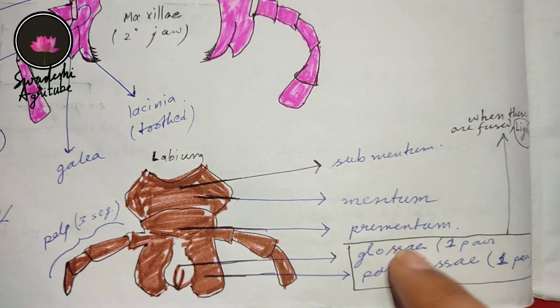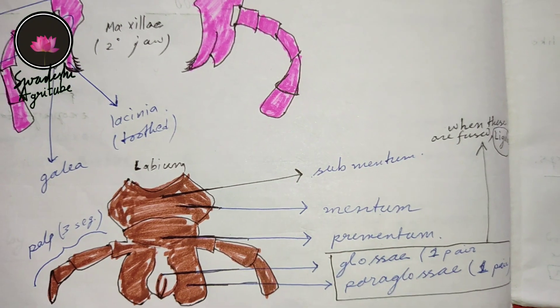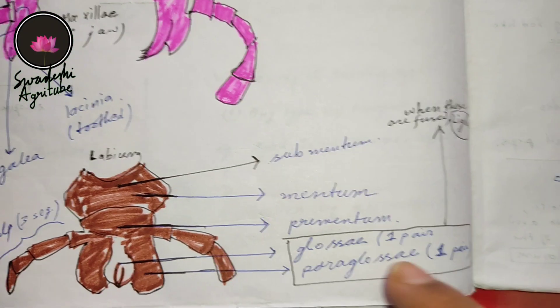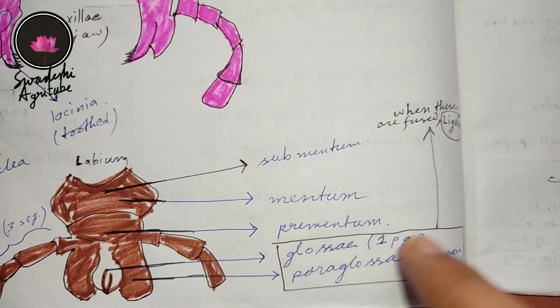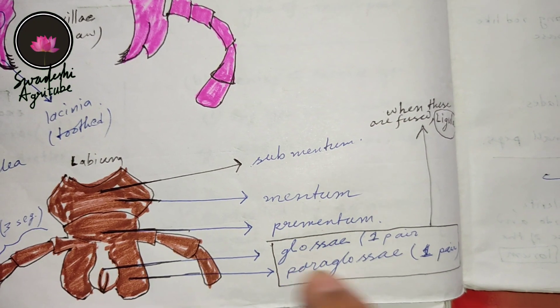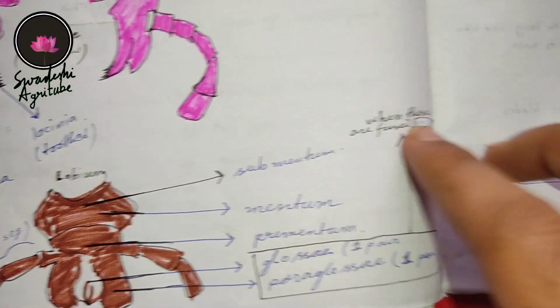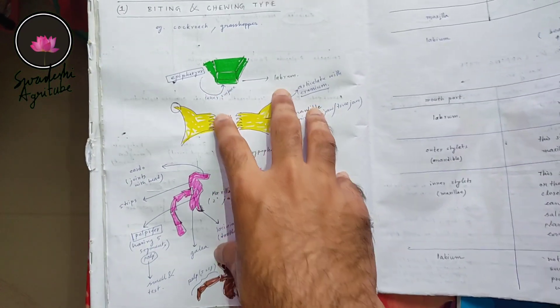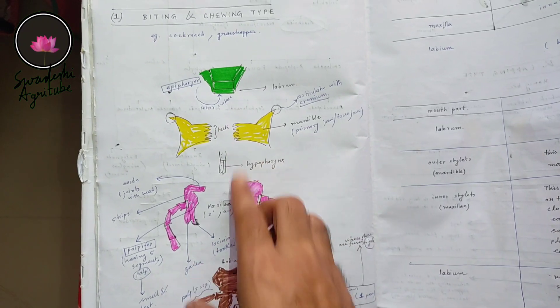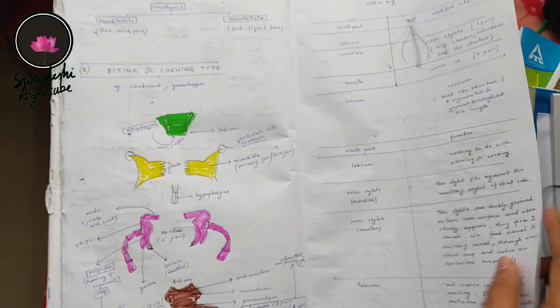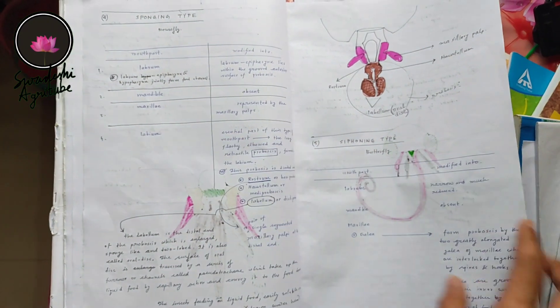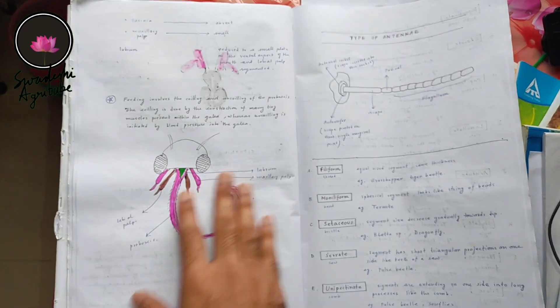There is a lot of modification of glossa and paraglossa in piercing and sucking type and chewing and lapping type mouthparts, so remember them well. One more important point: if the glossa and paraglossa are actually fused in some insects, that fused structure is called ligula. That's all for today. Just remember these things and they will help very much while studying the other types of mouthparts. I will make detailed videos of all of these. Thanks for today.